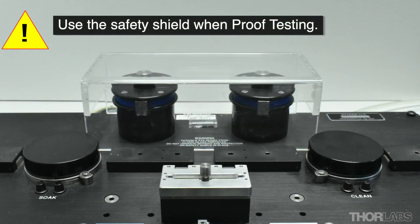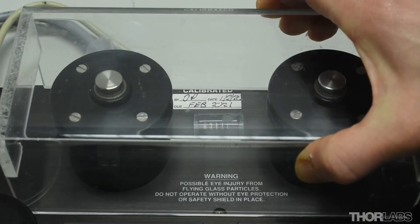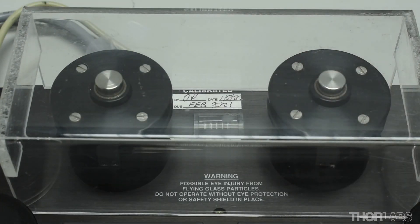The unit is provided with a clear plastic proof test shield, which should be used to contain the glass fragments should the fibre break.